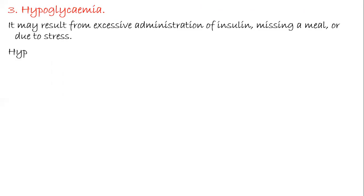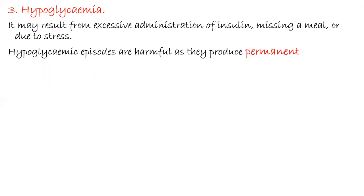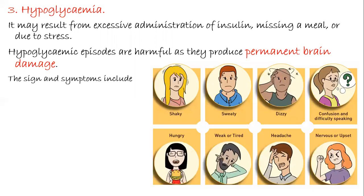The third acute complication is hypoglycemia. It may result from excessive insulin administration, missing a meal, or stress. Hypoglycemic episodes are harmful as they can produce permanent brain damage. Signs and symptoms include shakiness, increased sweating, dizziness, confusion and difficulty speaking, nervousness, headache, weak or tired feeling, and constant hunger. Hypoglycemia can occur in both types of diabetes mellitus.